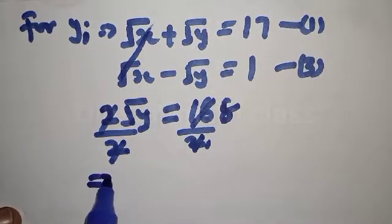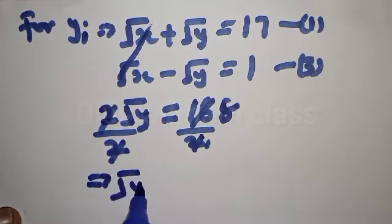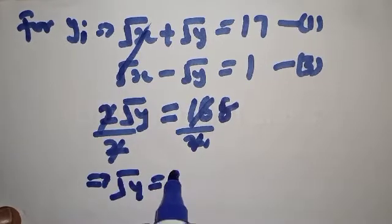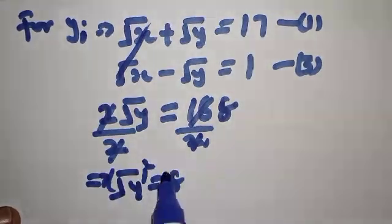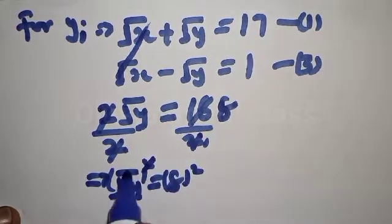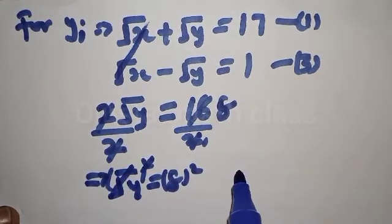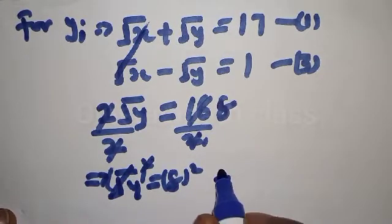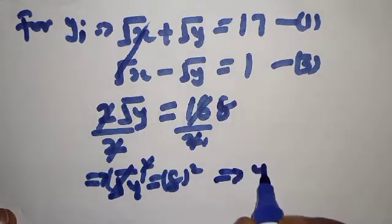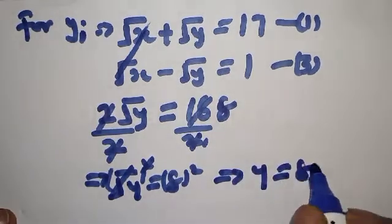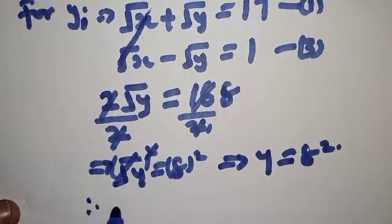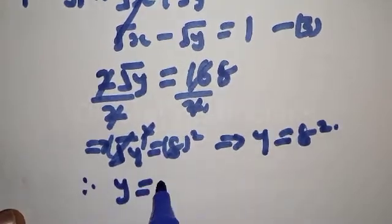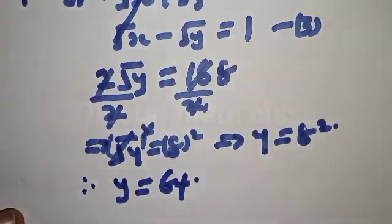This implies that square root of Y equals 8. Squaring both sides, the square cancels the square root, so Y equals 8 squared. Therefore Y is equal to 64.